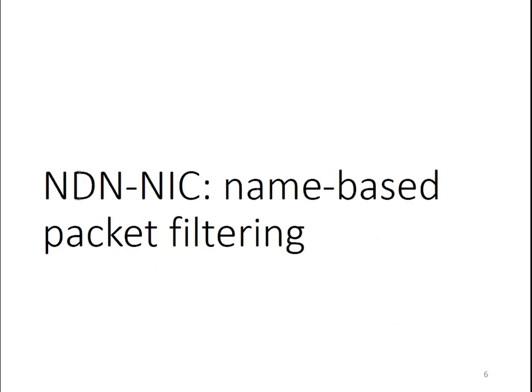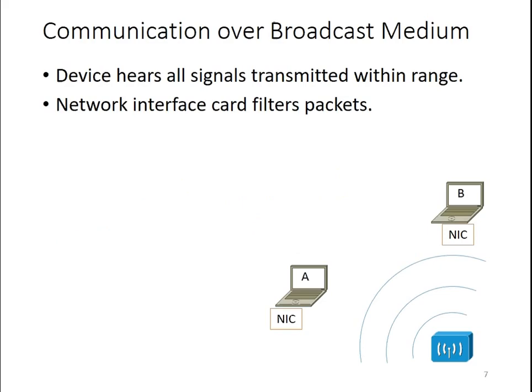Let's go into the first part: NDN link. NDN link operates in a single broadcast medium on an end host. The property of a broadcast medium is that each device can hear all the signals transmitted within range. In the current system, the network interface card will filter packets.